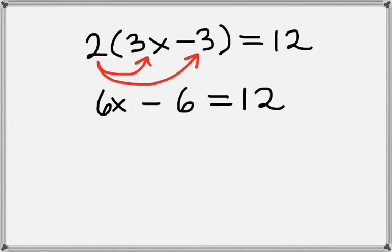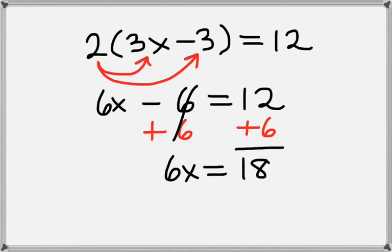Now we want to get the 6x term by itself, so we'll add 6 to both sides. That leaves us with 6x on the left-hand side, and on the right-hand side, we have 12 plus 6, which is 18.